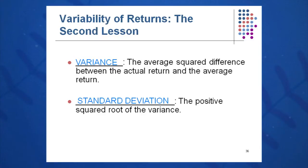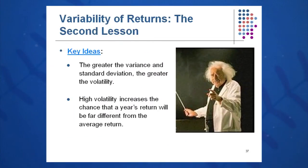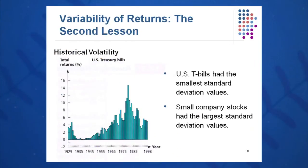Variance is simply the average squared difference between the actual return and the average return, and the standard deviation is the positive square root of the variance. The greater the variance, the greater the standard deviation, and the greater the volatility of the instrument. High volatility increases the chance that a year's return will be far different from the average. T-bills don't vary much, so they have a very small standard deviation and variance. Small company stocks are the riskiest instrument and have higher standard deviation values.